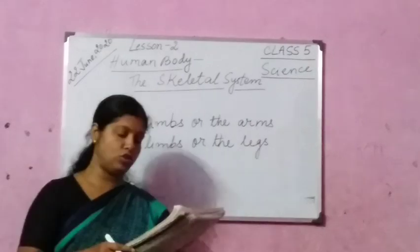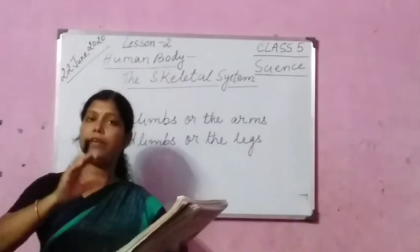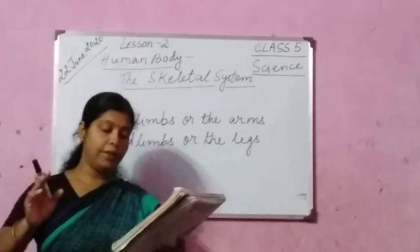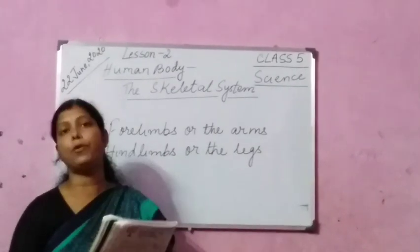Femur is joined to tibia and fibula at the knee. Many small bones join together to make up the ankle and the foot. The back portion of your leg is your ankle, and the front portion is the foot.